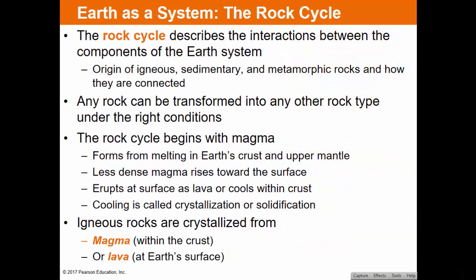One of the underlying themes of Earth science is that Earth is a system — not just hydrology, the atmosphere, the geosphere, or planetary science, but all those systems working together. Within each system there are cycles. One of the primary cycles we study is the rock cycle, which describes the interactions between components of the Earth's system — the origins of igneous, sedimentary, and metamorphic rocks, and how they are connected.